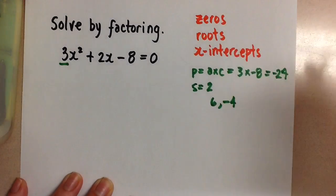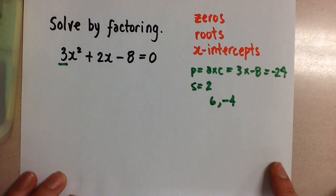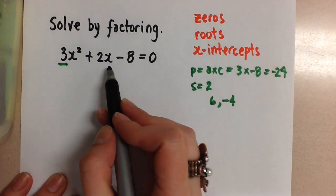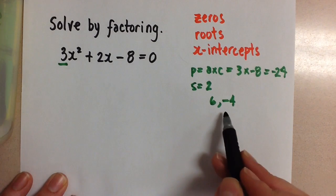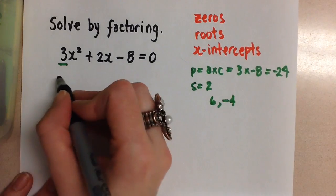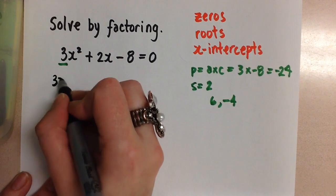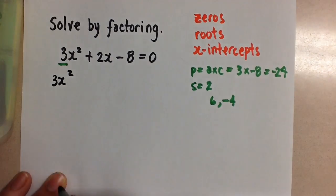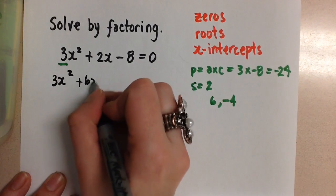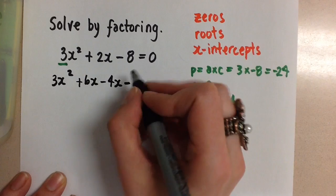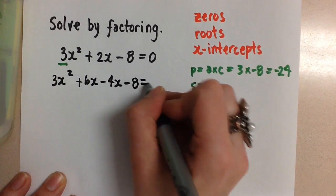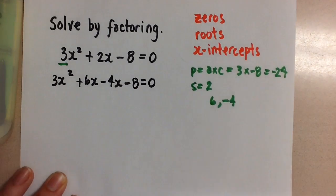So now that we've found those two numbers, we can go ahead and factor this using decomposition. We're going to break up our middle term using the two numbers that we found. So this is going to become 3x² + 6x - 4x - 8 = 0.